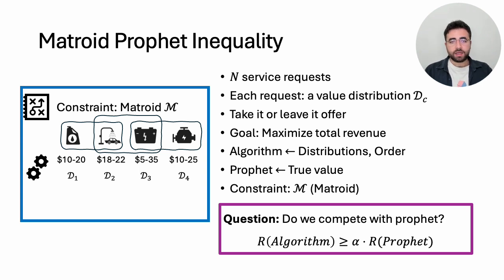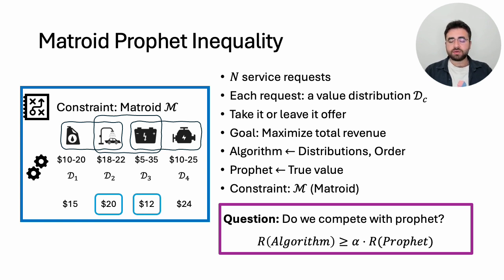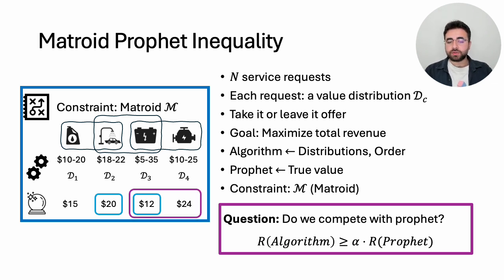Consider the figure, where feasible sets of services are indicated in curly boxes. We learn true values one by one: 15 — algorithm skips; 20 — algorithm selects; 12 — algorithm accepts; 24 — algorithm cannot accept because it is no longer feasible. Again, a prophet who knows the future might generate 36 dollars, but the algorithm generated 32 dollars. The question remains: can we design an algorithm to compete with the prophet?